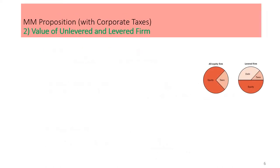We are going to learn how to calculate the value of unlevered and levered firm based on MM Proposition 1 in a world with corporate taxes. We use VU for the value of the unlevered firm, which is a firm without debt. The value of the unlevered firm is the present value of future annual after-tax cash flows available to shareholders, discounted at the cost of equity R0. R0 stands for the unlevered cost of equity — zero meaning zero debt. This formula is a zero-growth model, assuming EBIT will continue forever into infinity.